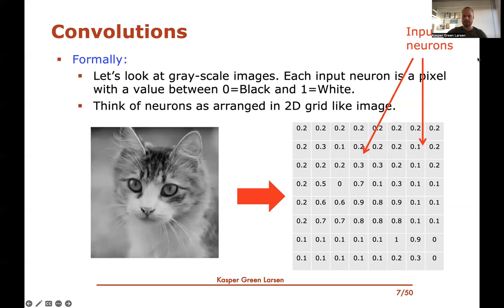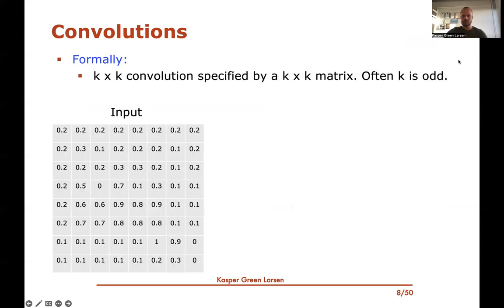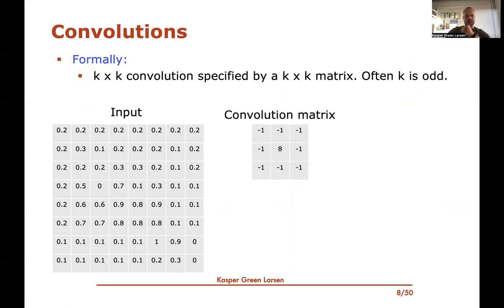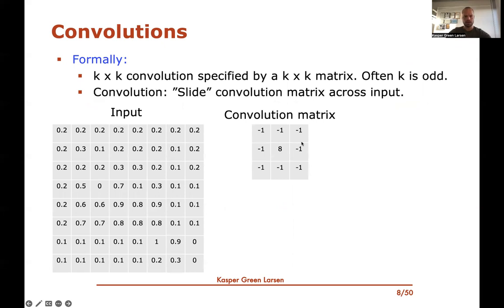Each entry in this grid is an input neuron. When we do a convolution, it's specified by a parameter k — typically an odd number — and the convolution is given by a k×k matrix. For example, here's a 3×3 matrix with minus ones at the edges and an eight in the middle. This is an arbitrary choice for now; we'll see later how to choose these convolutions.